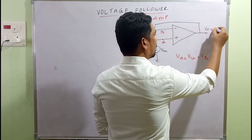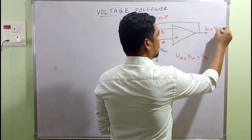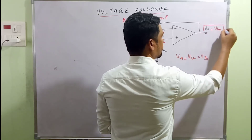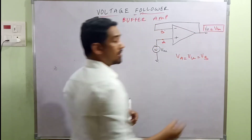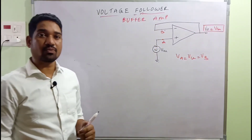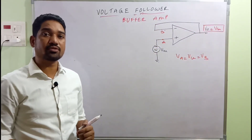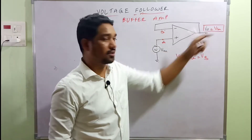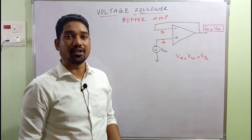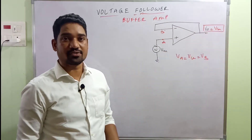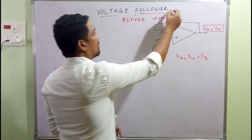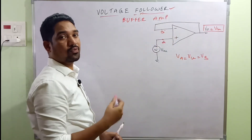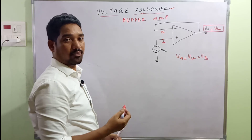According to the virtual ground concept, the same V-in appears at the output. So V-naught is equal to V-in. What conclusion should be made from that equation? V-naught is simply V-in — the output is following the input voltage.